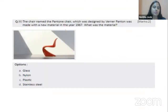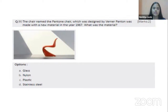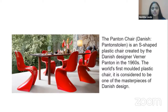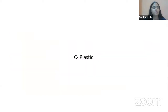On screen is a very famous chair — the Panton chair — designed by Verner Panton and made with a new material in 1967. This chair gained fame for its material. It brought a revolution in materials used for furniture. This was the first chair ever made entirely of plastic, and only 150 pieces were initially made as an experiment. The right answer is C, plastic.